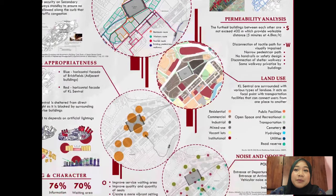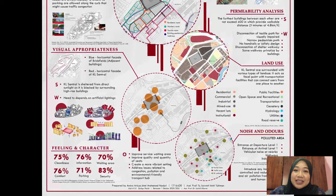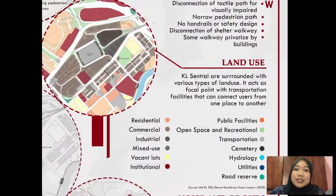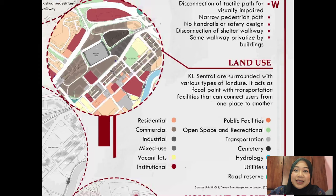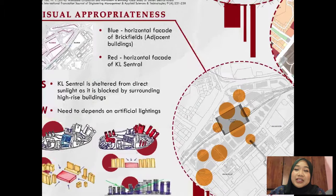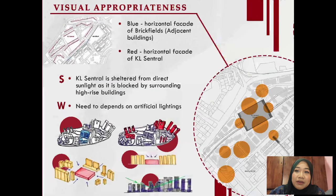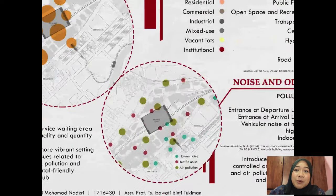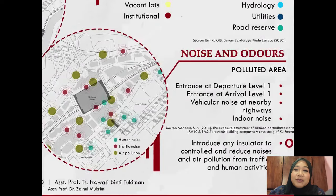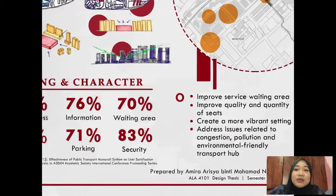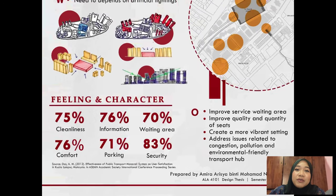Moving on to visual appropriateness based on land use of KL Central — KL Central has various types of land use including residential, commercial, open spaces, utilities and others. This has created a visual appropriateness to KL Central Station as it is sheltered from direct sunlight. However, because of these various land uses, the area is polluted with air pollution, human noise and traffic noise, especially at the entrances. Based on research done in 2012, users are not really satisfied with the overall design of KL Central and the quality of air at the area.